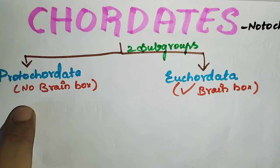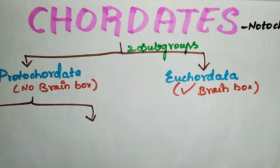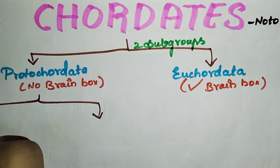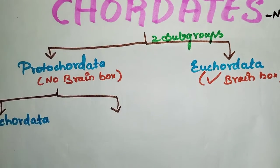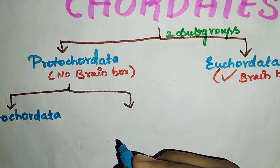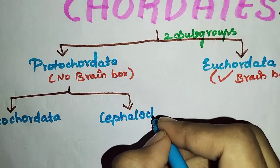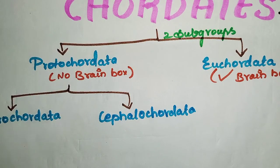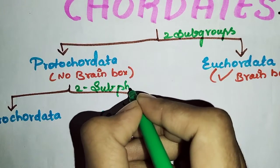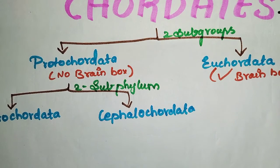This subgroup Proto-chordata is divided into two subphyla. The first subphylum is Urochordata, and the second subphylum is Cephalochordata. These two subphyla are classified based on the presence of their notochord across their life span.